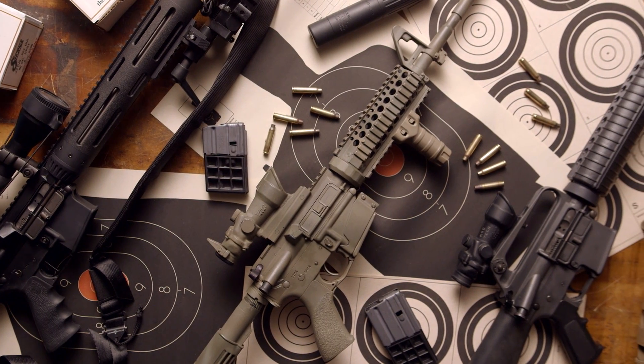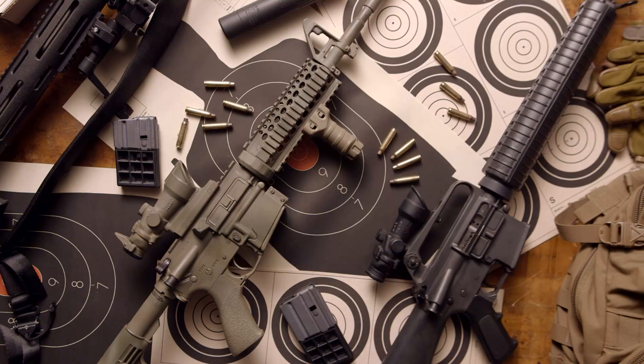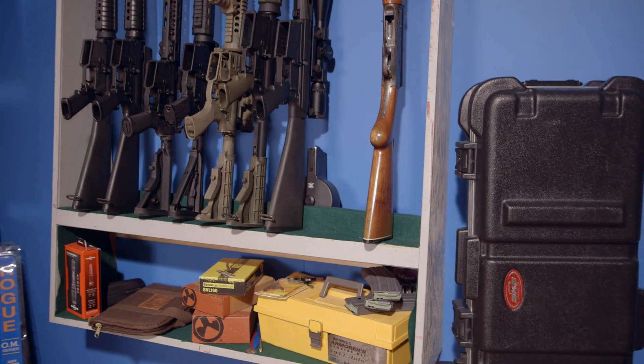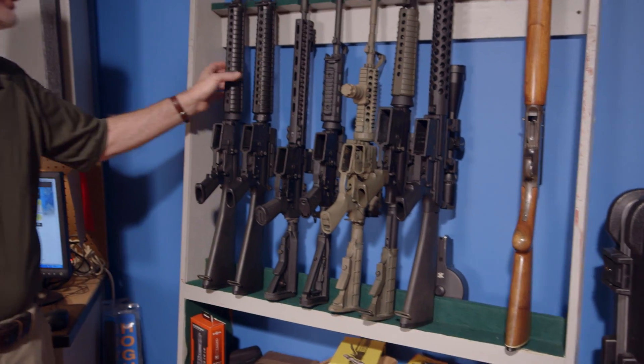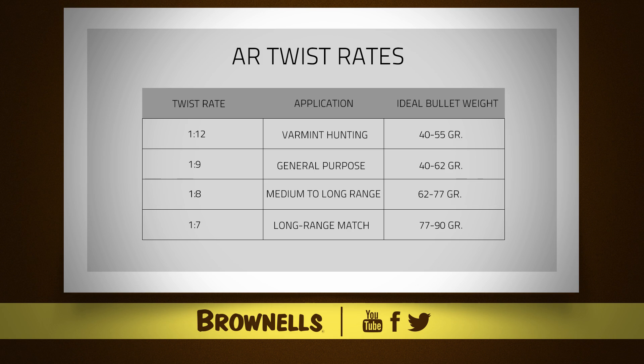To simplify this, let's take a look at a few of the most common .223/5.56 AR twist rates, their ideal applications, and suggested bullet weights. Starting at the low end, the slowest twist you're likely to find in the AR world is a 1-in-12. This slower twist is better suited to bullets at the light end of the scale traveling at higher velocities — very useful for varmint hunting where lighter, thin-jacketed bullets from 40 to 55 grains are likely to be used.